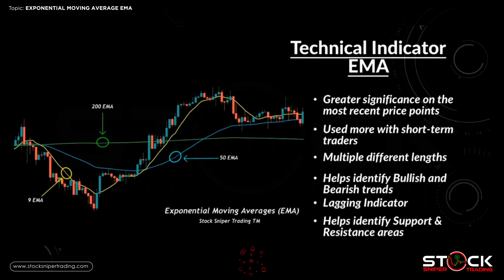The EMA is a technical indicator that can be placed on your main chart with your price action candlesticks. It places greater significance on the most recent price points and is used more with short-term traders because it is faster — it's exponential as opposed to the Simple Moving Average. You can select multiple different lengths. It helps identify bullish and bearish trends, it is a lagging indicator, and it also helps identify support and resistance areas based on whether price action is above or below the moving average.